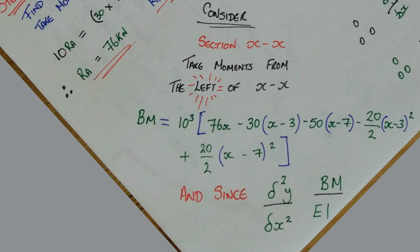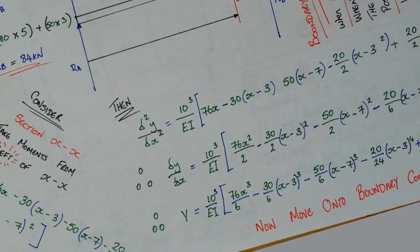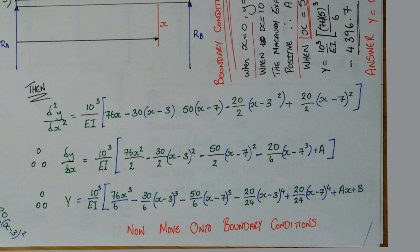And since the second derivative of Y with respect to X is equal to bending moment divided by flexural stiffness, we end up with this sum. Now I am not going to read it out because it is so long winded, but I am going to leave it up here for a couple of seconds and you can read it all the way through.